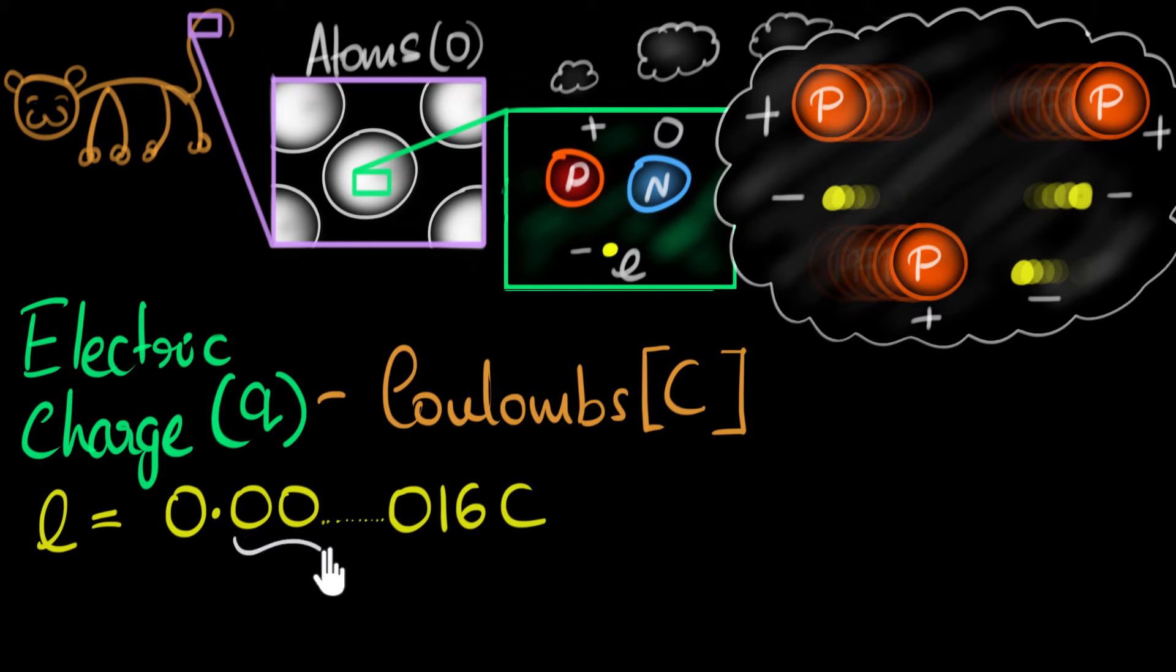And the number of zeros over here are 18. There are 18 zeros in between. It just goes to show you how small the charge on the electron or the proton is. So the electron has this much charge, but it's negative.